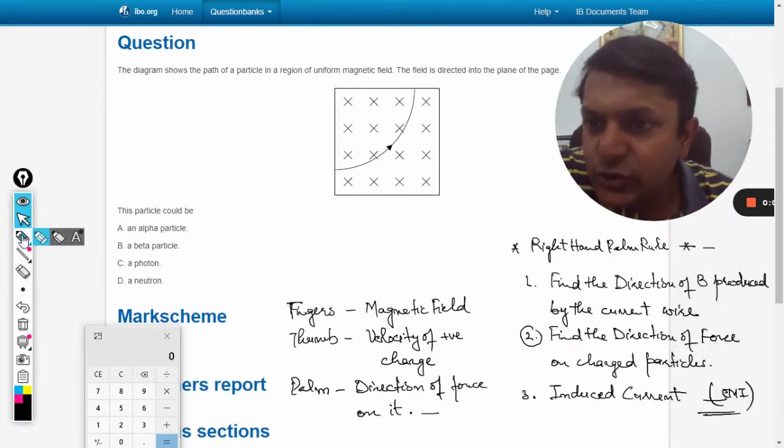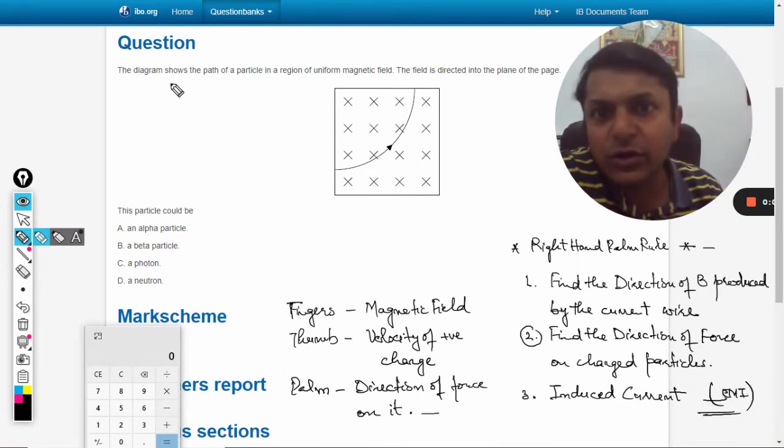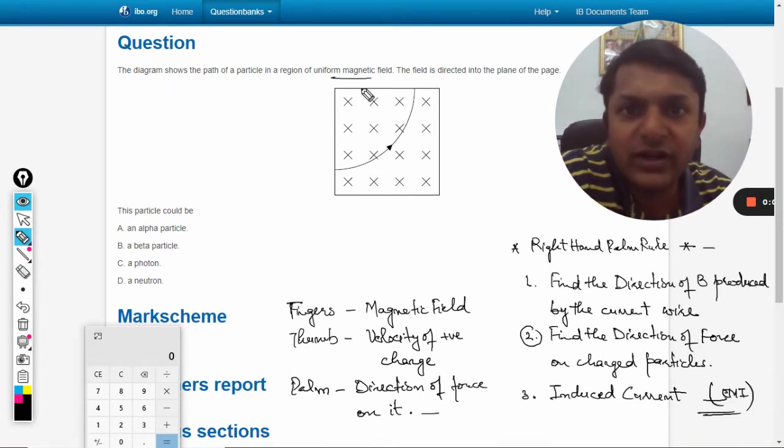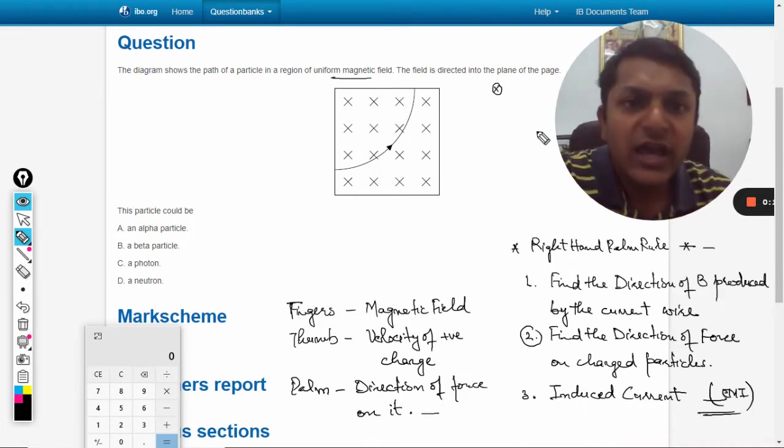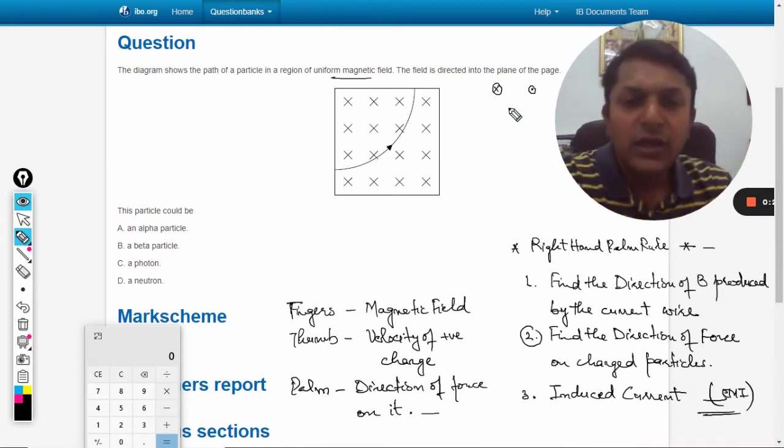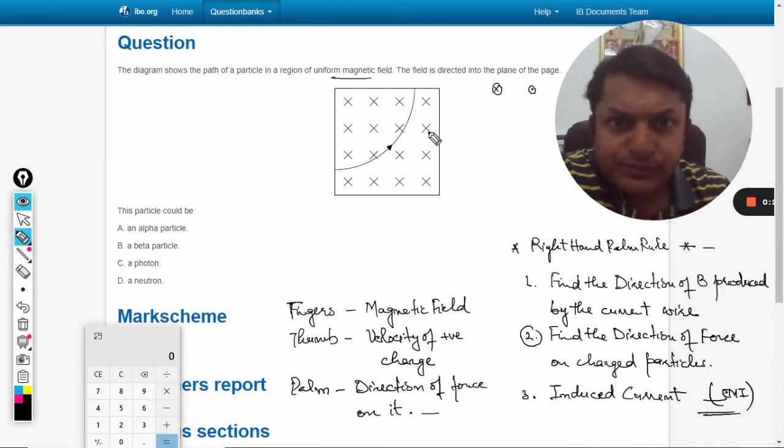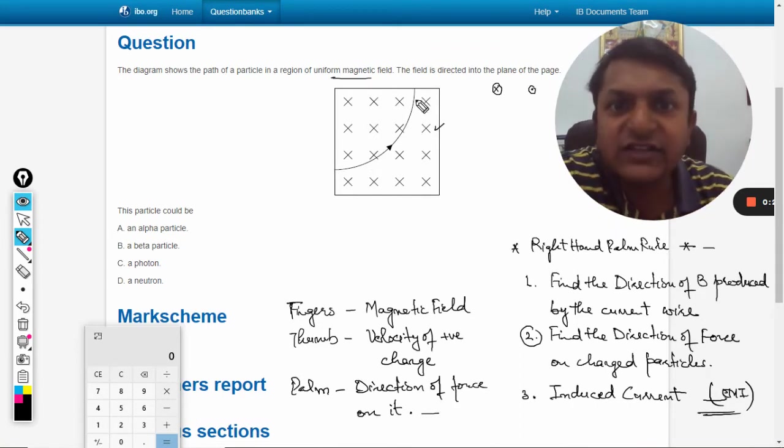In this question, the diagram shows the path of a particle in a region of uniform magnetic field. The field is directed into the plane of the page, as shown by the cross symbol. A cross means the magnetic field is into the page, and a dot would mean the field is coming out of the plane. The magnetic field is into the board, and the trajectory followed by the particle is shown.